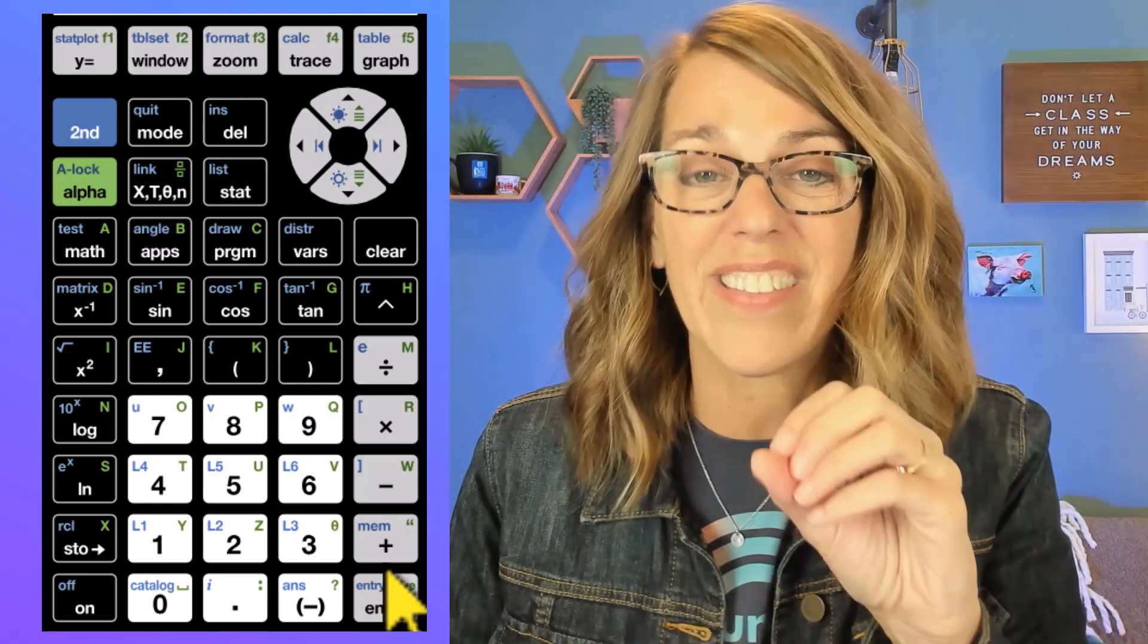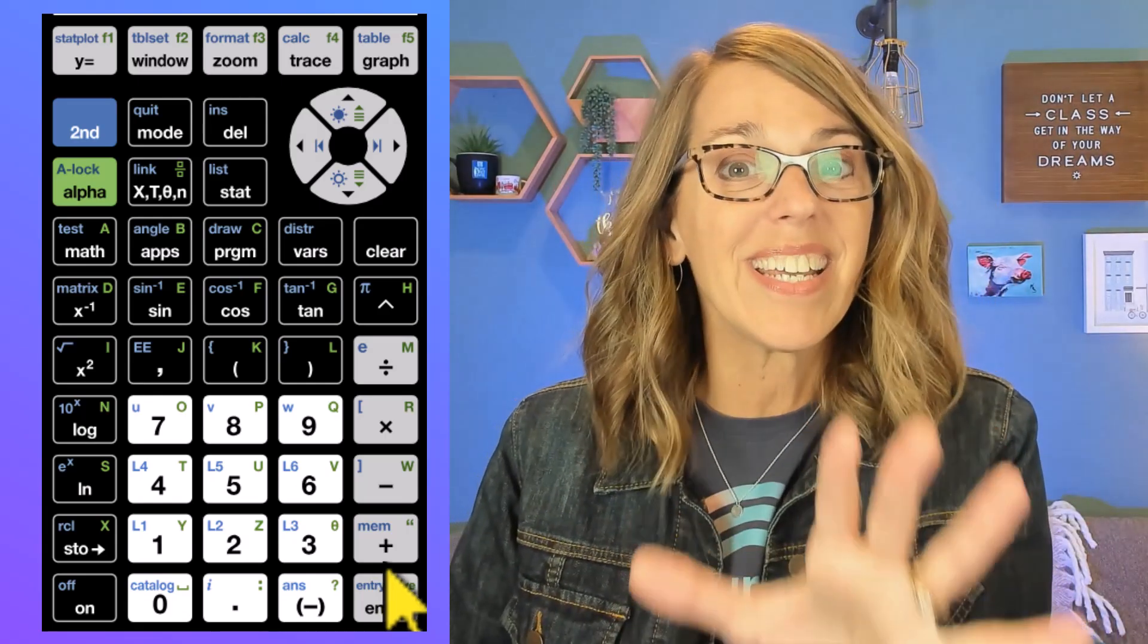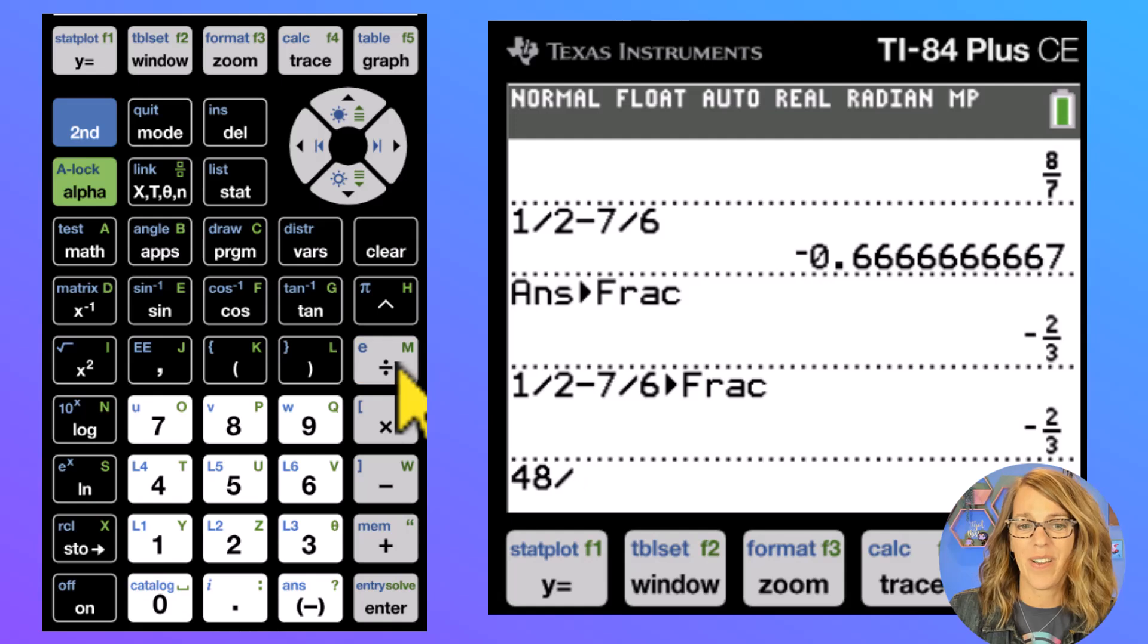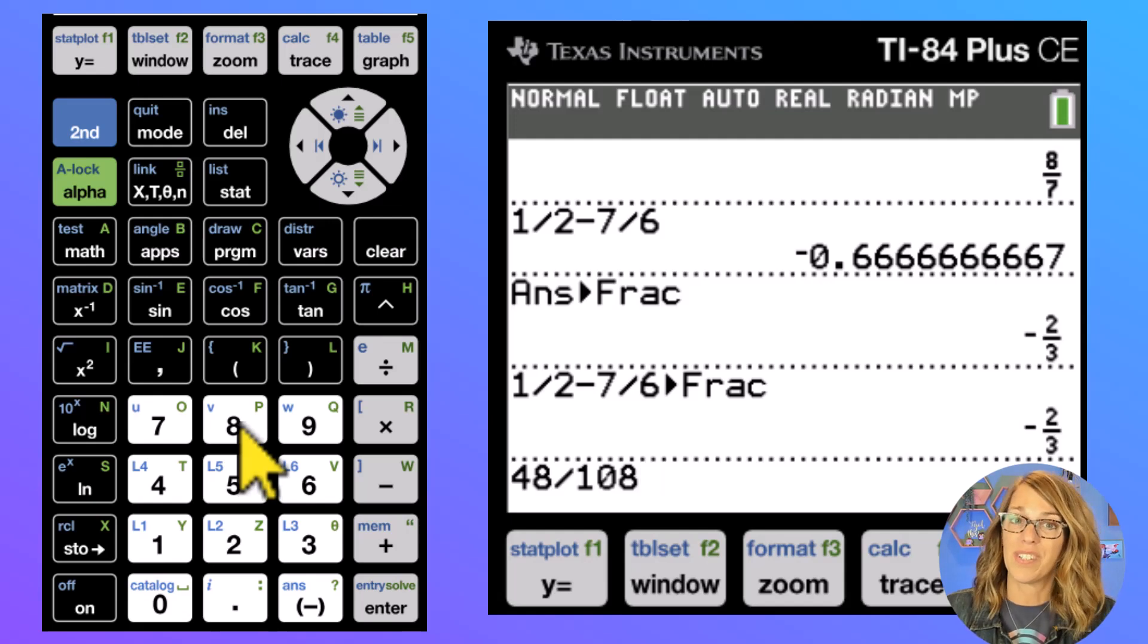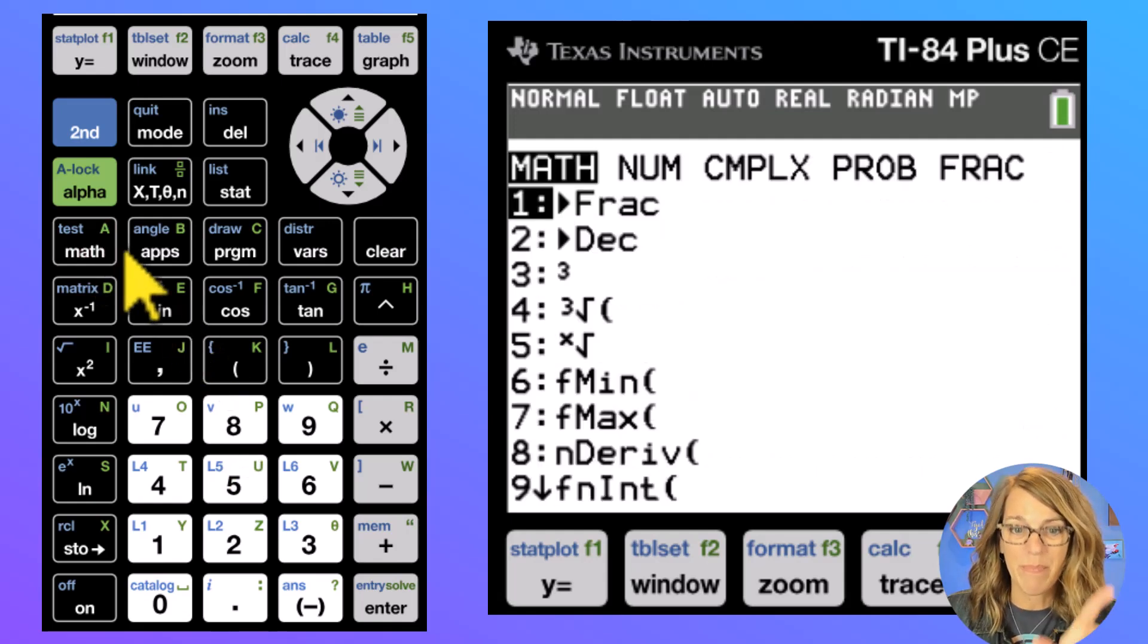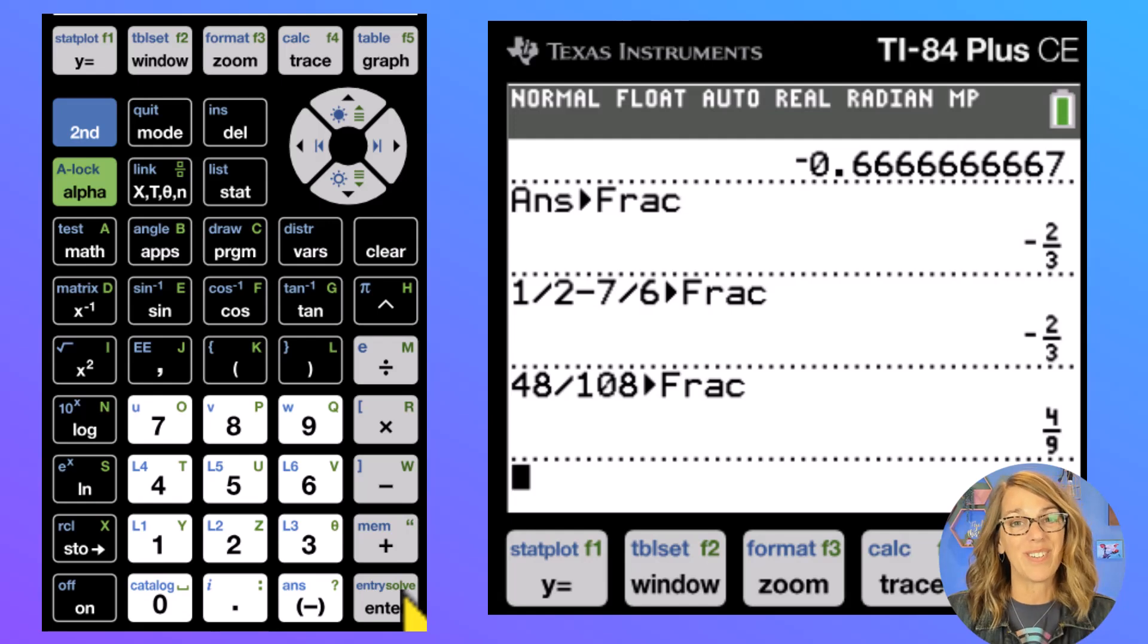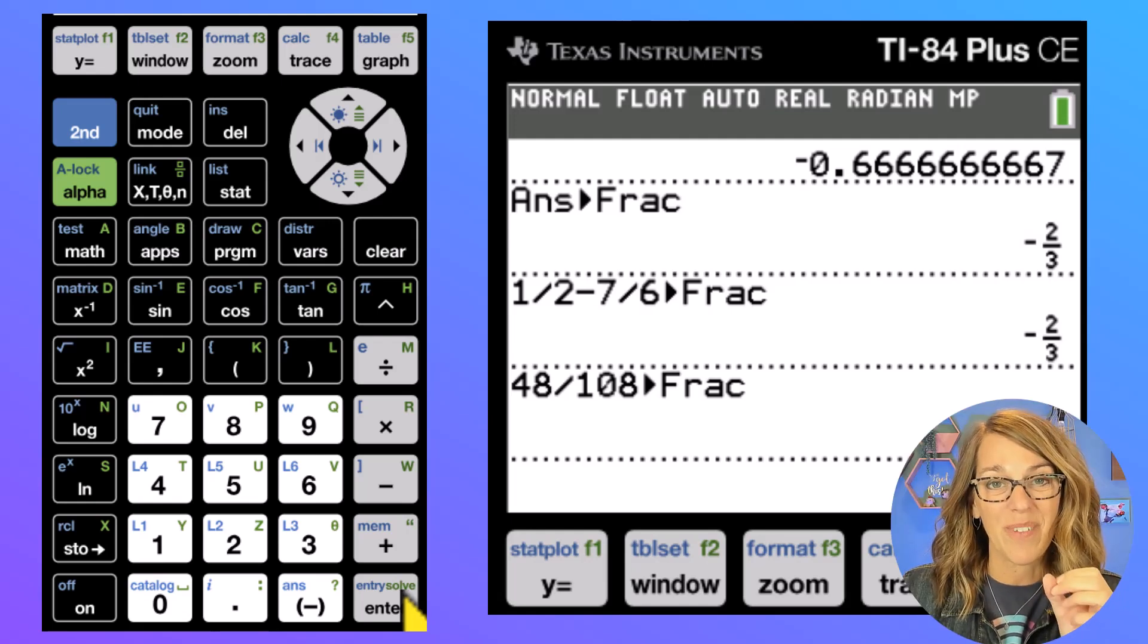The other thing that this calculator is amazing at is reducing fractions. Let's say that you had the fraction, I don't know, 48 over 108. And you wanted to reduce this fraction. To reduce it, I'm just going to ask the calculator to math menu, convert to fraction. And it gives me the reduced form. Life changing, right?